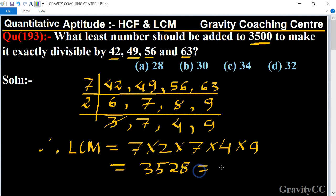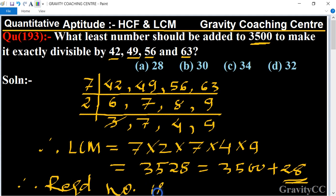write 3500 plus 28 equals 3528. So here 28 is the least number. Therefore, the required number is 28.